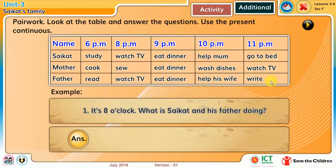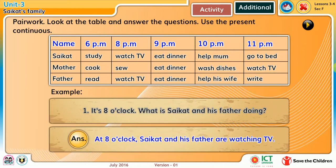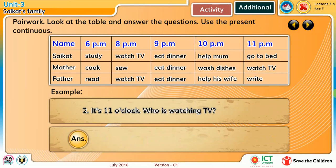Look at the table and answer the questions. Use the present continuous. Question 1: It's eight o'clock. What is Shurikot and his father doing? At eight o'clock, Shurikot and his father are watching TV. Question 2: It's eleven o'clock. Who is watching TV? At eleven o'clock, Shurikot's mother is watching TV.